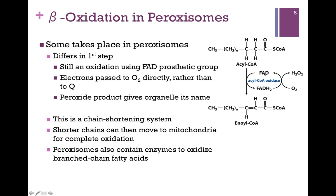The electrons are transferred to an FAD cofactor on the enzyme that catalyzes this reaction. However, instead of those electrons then being passed to Q, which is not present within the organelle, they are passed directly to oxygen, and we generate hydrogen peroxide. That's where the organelle gets its name — because of this peroxide product. So it's a kind of chain-shortening system. These shorter chains can then move to the mitochondria and go through the regular rounds of beta-oxidation.